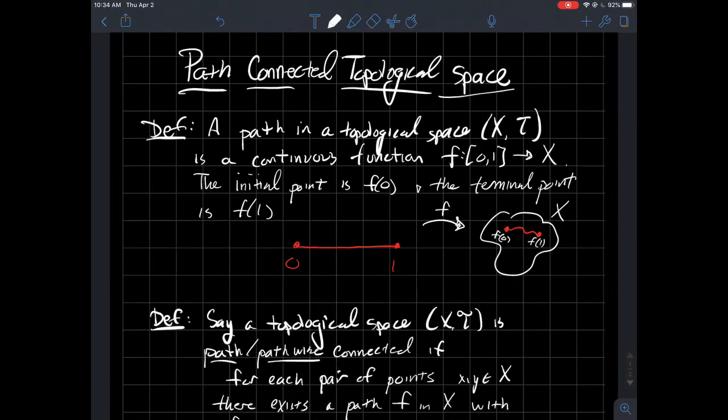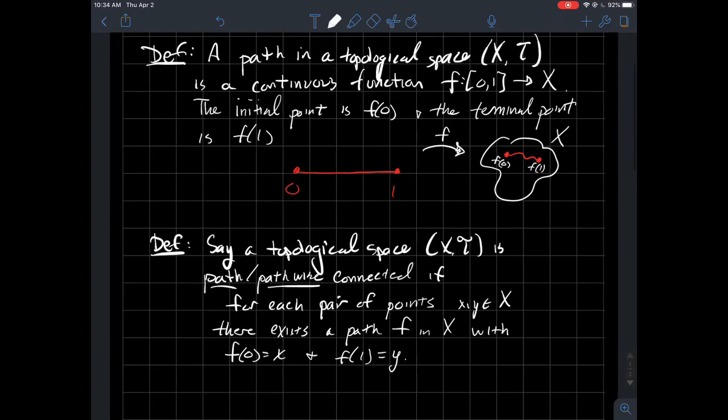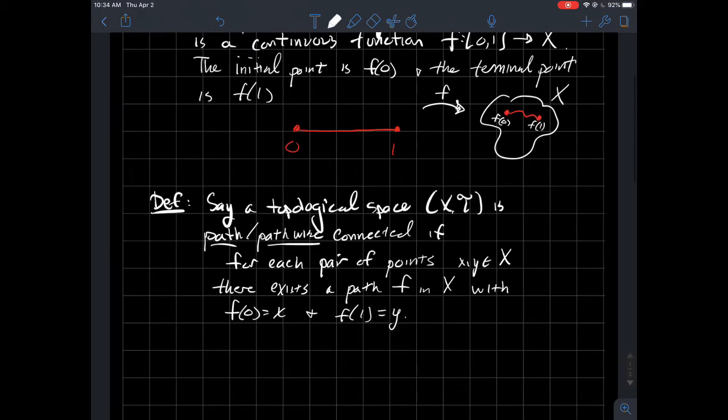And that takes me to the definition of what a path-connected or path-wise-connected, same thing, space is. So we'll say that a topological space is path-wise connected if, for each pair of points that you pick in your space, x and y, there has to be a path f from x to y.